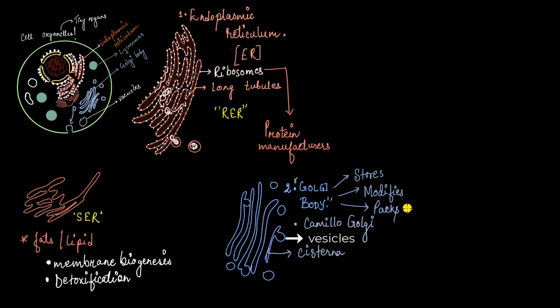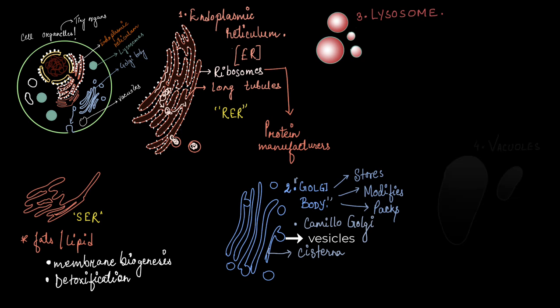But sometimes, certain packages do not leave the factory. Or I should say, certain vesicles never leave the cell. Instead, they remain suspended in the cytoplasm, forming a whole different organelle on its own. And if these vesicles are filled with powerful digestive enzymes capable of breaking down organic material, we call it the lysosome. But if the vesicles are comparatively void or empty, we call it the vacuoles.